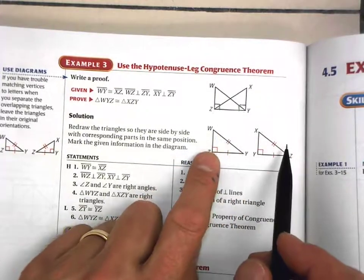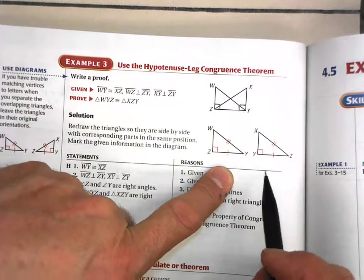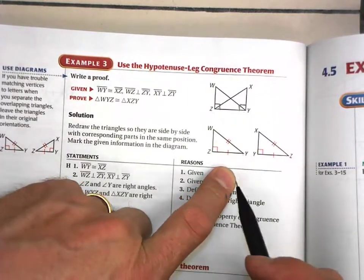Now I have these two triangles kind of separated. It's a lot easier for me to be able to now see what corresponding parts that I have that are congruent.